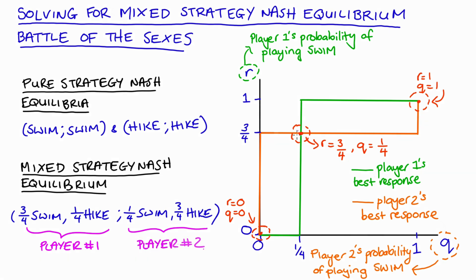We can look to the diagram to understand the intuition behind why these points are Nash equilibria. For the mixed strategy Nash equilibrium, if players deviated from that point — say q changed from one quarter to something less — player one's best response would shift to r = 0, not any r. For any q less than one quarter, player one's best response is r = 0, and for any q greater than one quarter it's r = 1, so players fall out of equilibrium if they try different probability combinations.